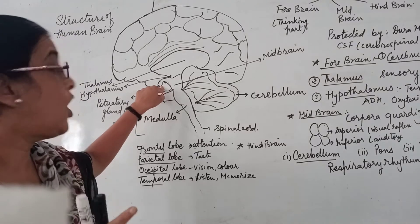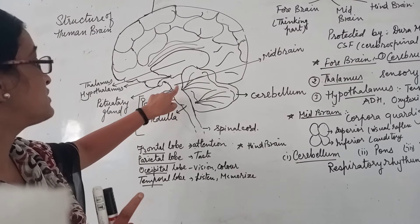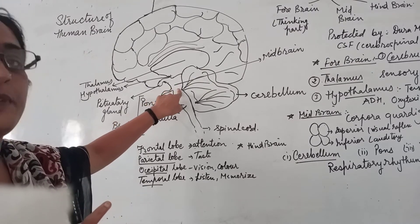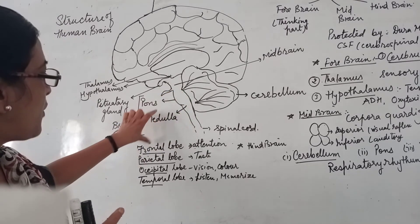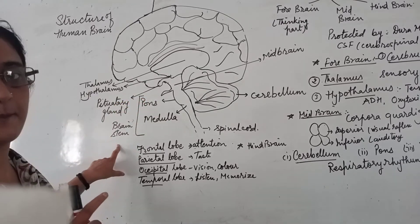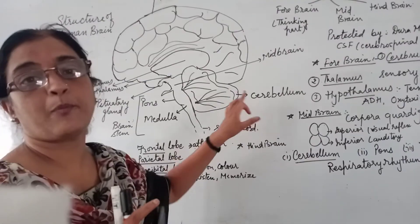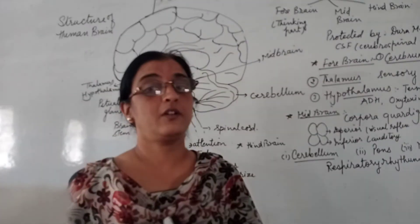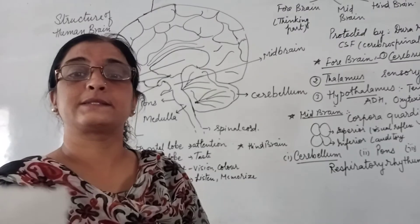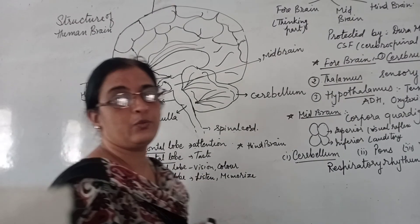The four lobes have different functions. The frontal lobe is responsible for attention — for example, paying attention to instructions from your teacher. The parietal lobe is used for sensation and touch. The occipital lobe is for vision — when you see something, you identify it. The temporal lobe is used to listen and memorize — if you hear something and memorize it, that is the function of the temporal lobe.